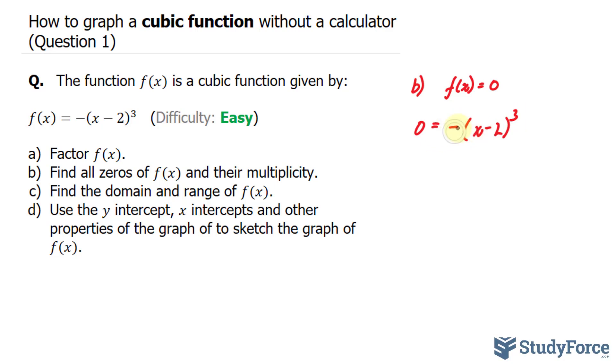Let's solve for x. I'll divide both sides by negative, that will cancel out that negative. On the left side, zero. So we have (x minus 2) raised to the power of 3.